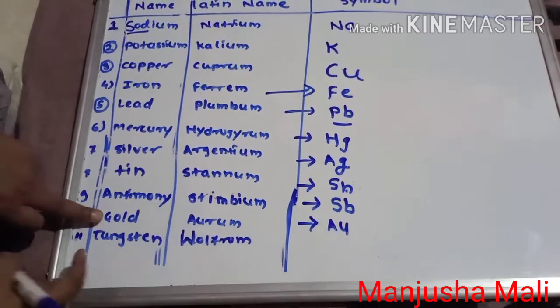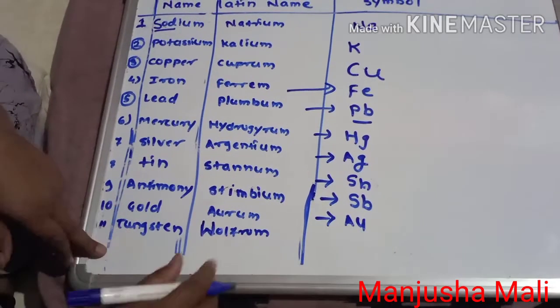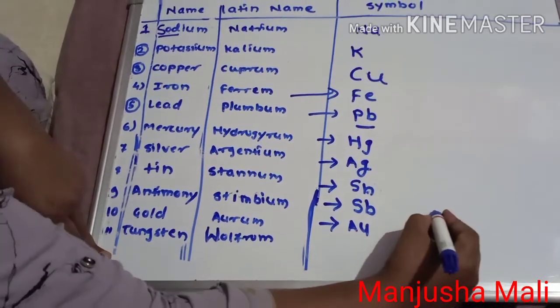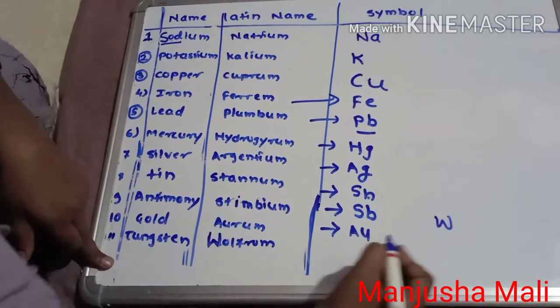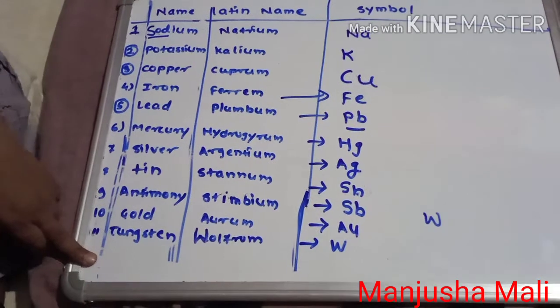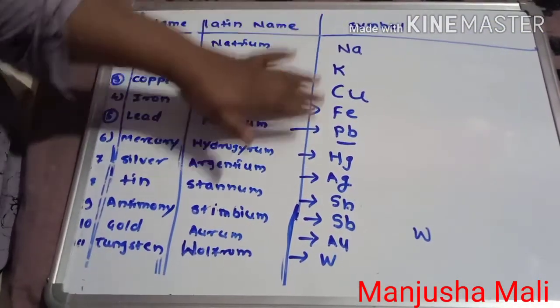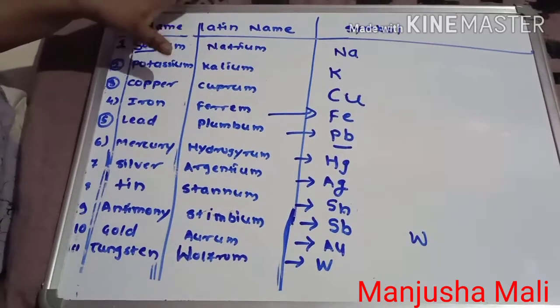And tungsten, tungsten's symbol is W. Wolfram is the Latin name.